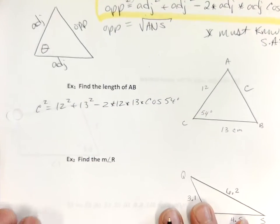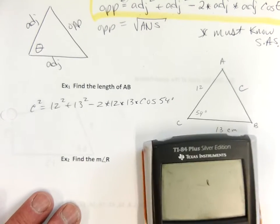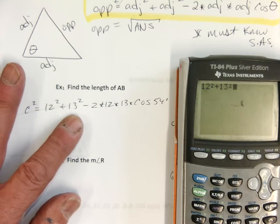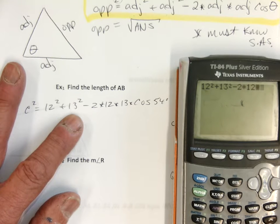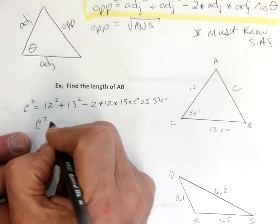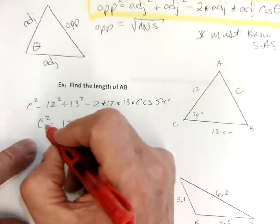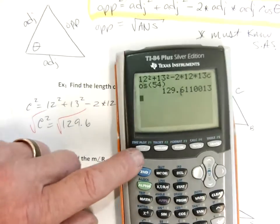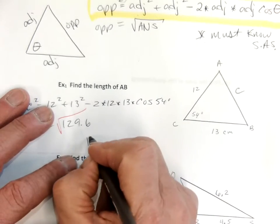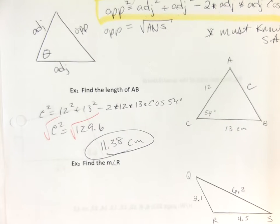Okay, thumbs up — everybody happy with that? It's actually really easy. I know I'm a math guy, I've been doing this forever. But for high school kids, this is not a hard formula — it's just long. So we're going to go 12 squared plus 13 squared minus 2 times 12 times 13 times the cosine of 54 degrees. That gives us about 129.6. And then of course we square root it — and I get about 11.38 centimeters.